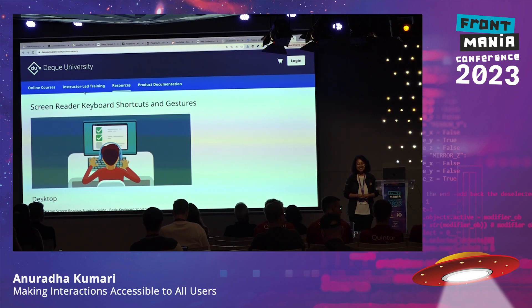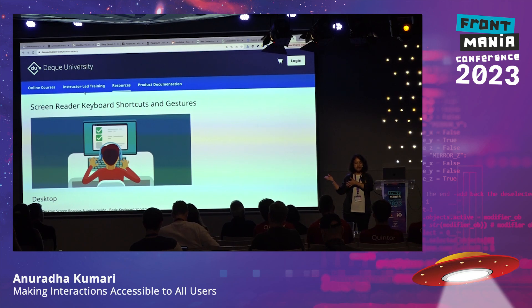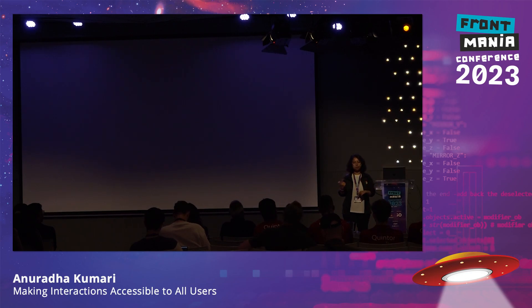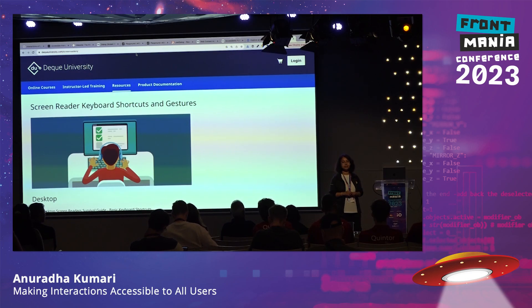Follow-up on page navigation: the page title should be unique on every URL so screen reader users know where they are. For multi-step flows — say seven or eight steps — when moving from step one to step two, the user should know they have moved. We can announce something like 'step two of seven' using a live region. That would be an example of live information, yes.